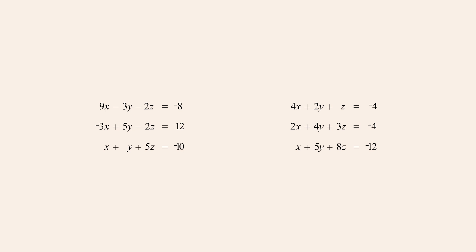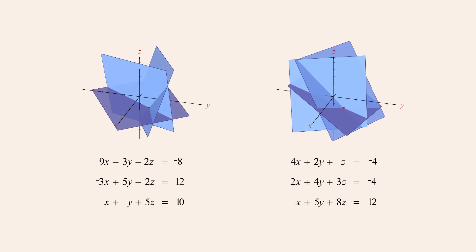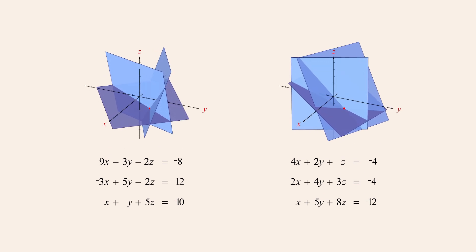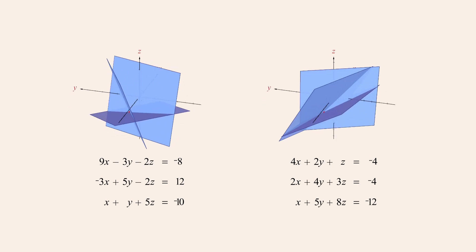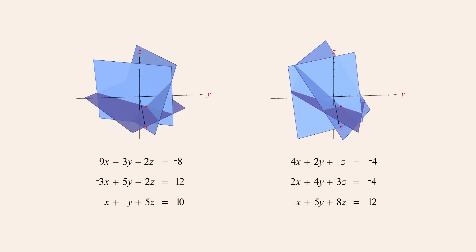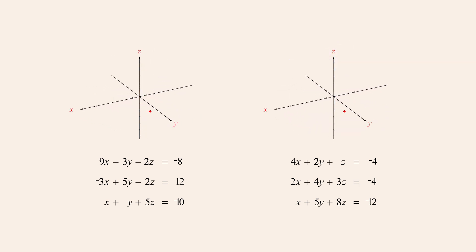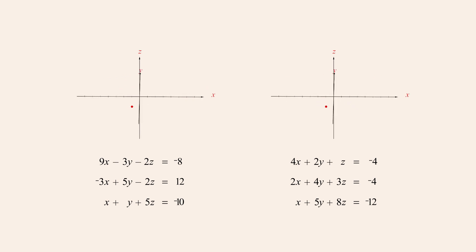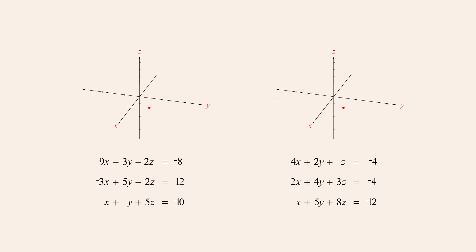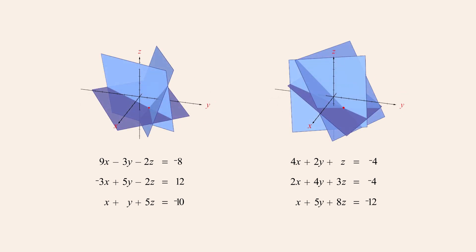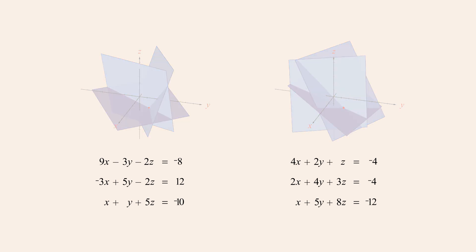For example, both of these systems of equations describe three planes which intersect at a single point. Although the planes in the first system are different from the planes in the second system, the point of intersection of the planes is the same in both systems.